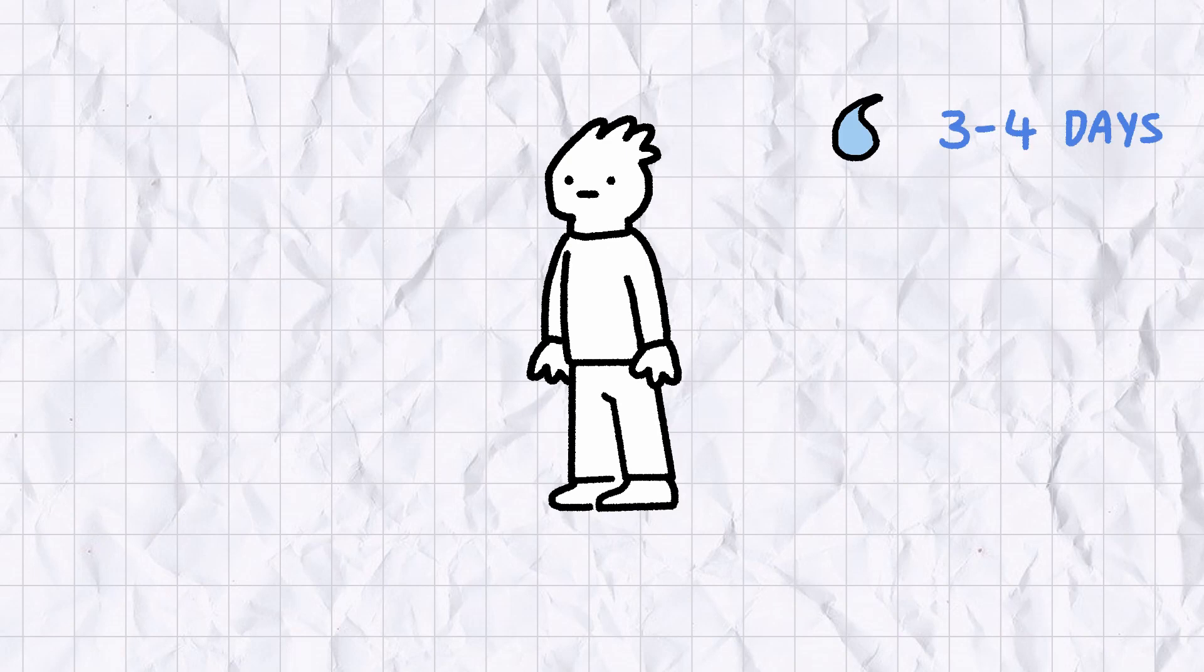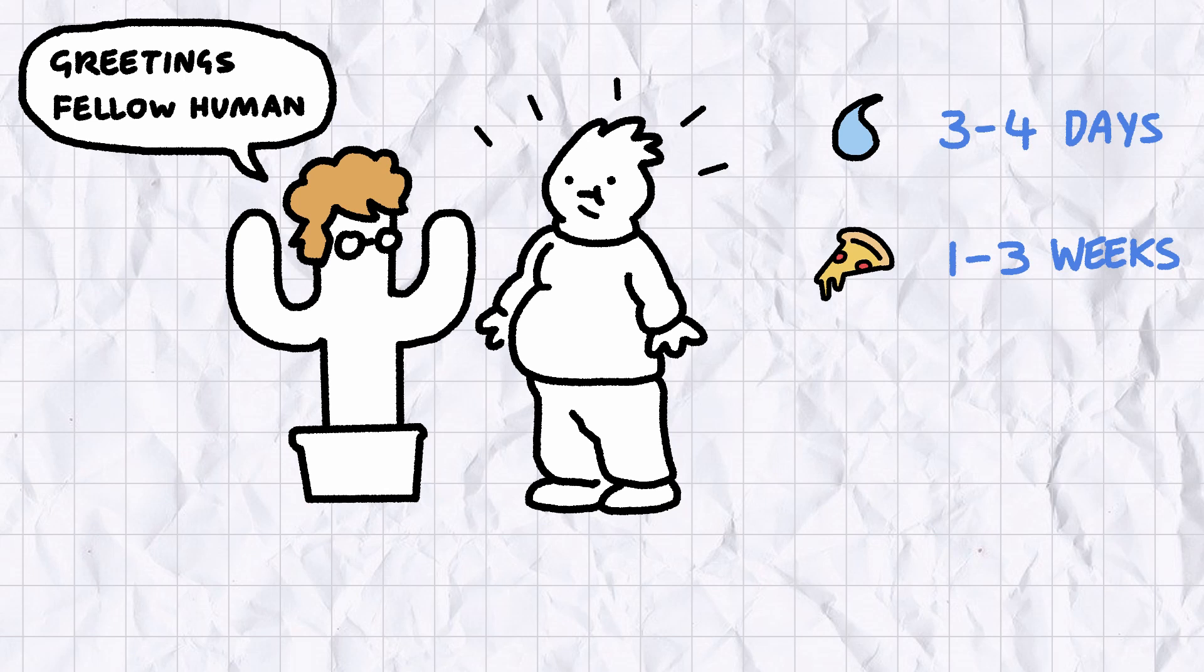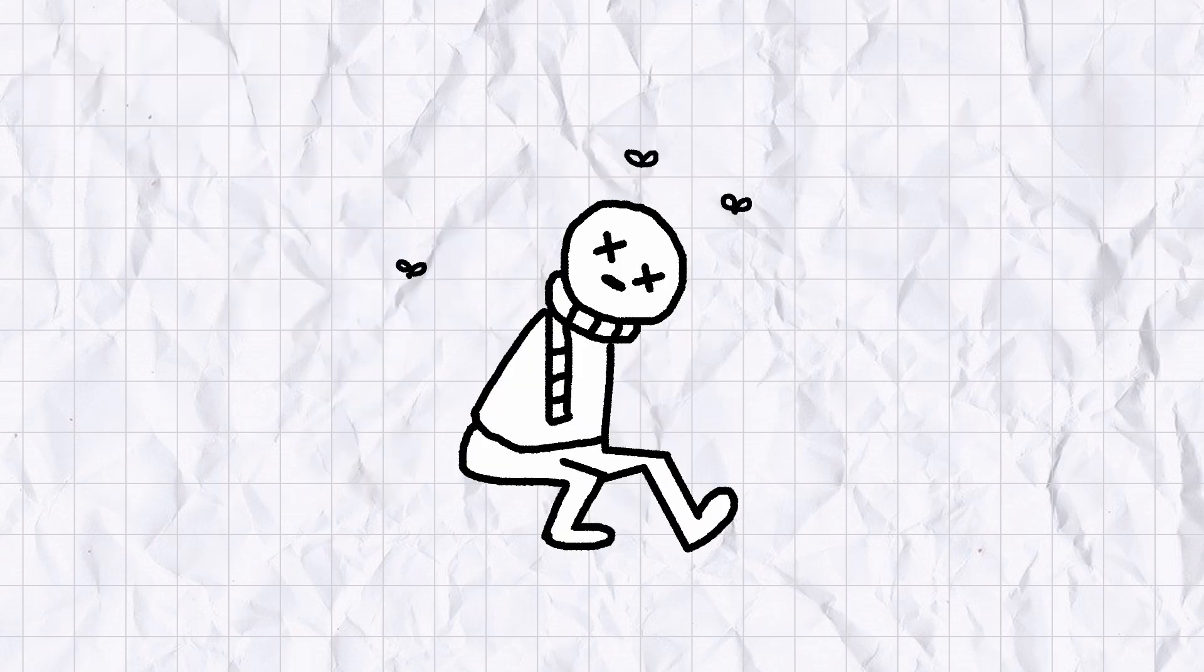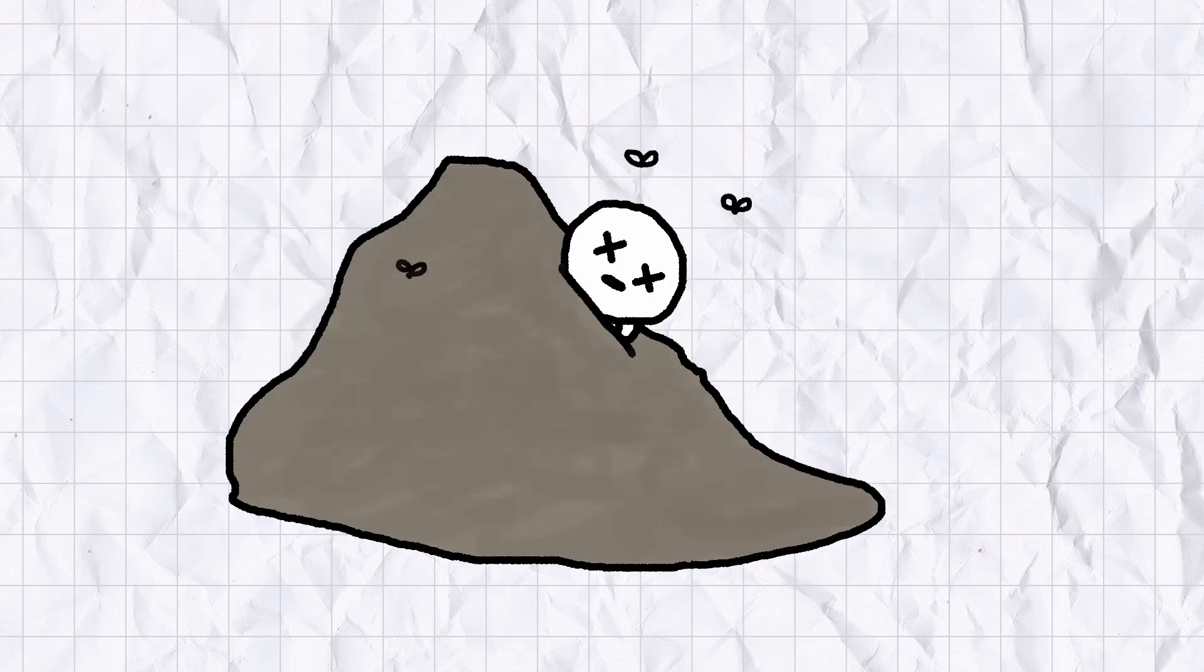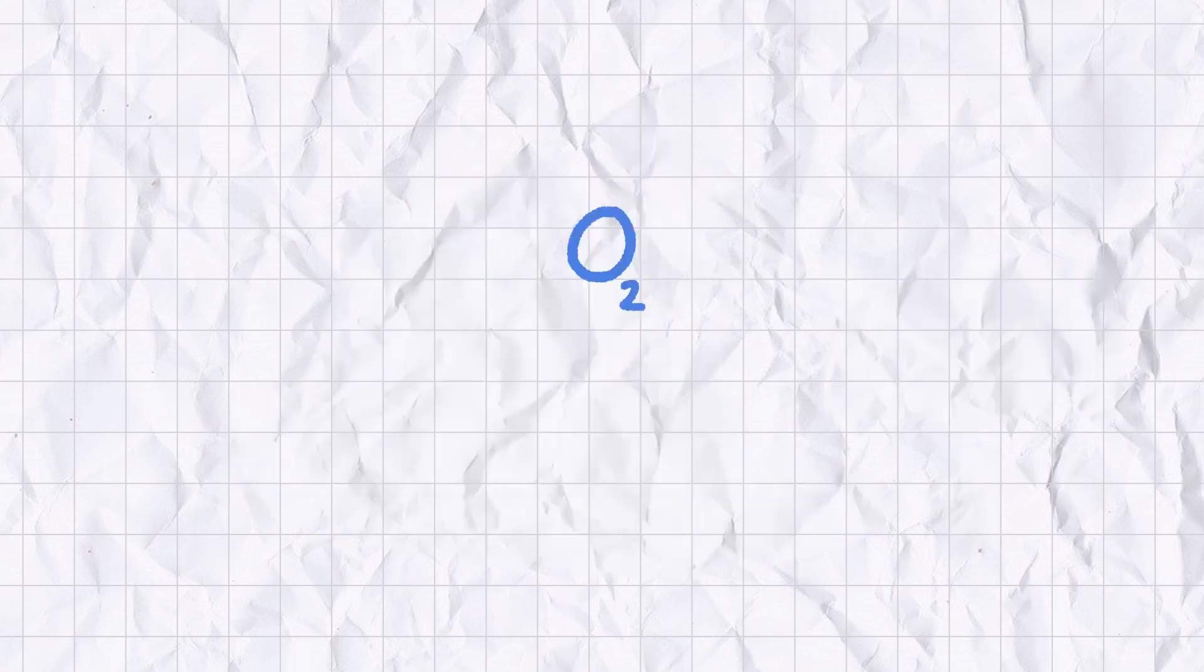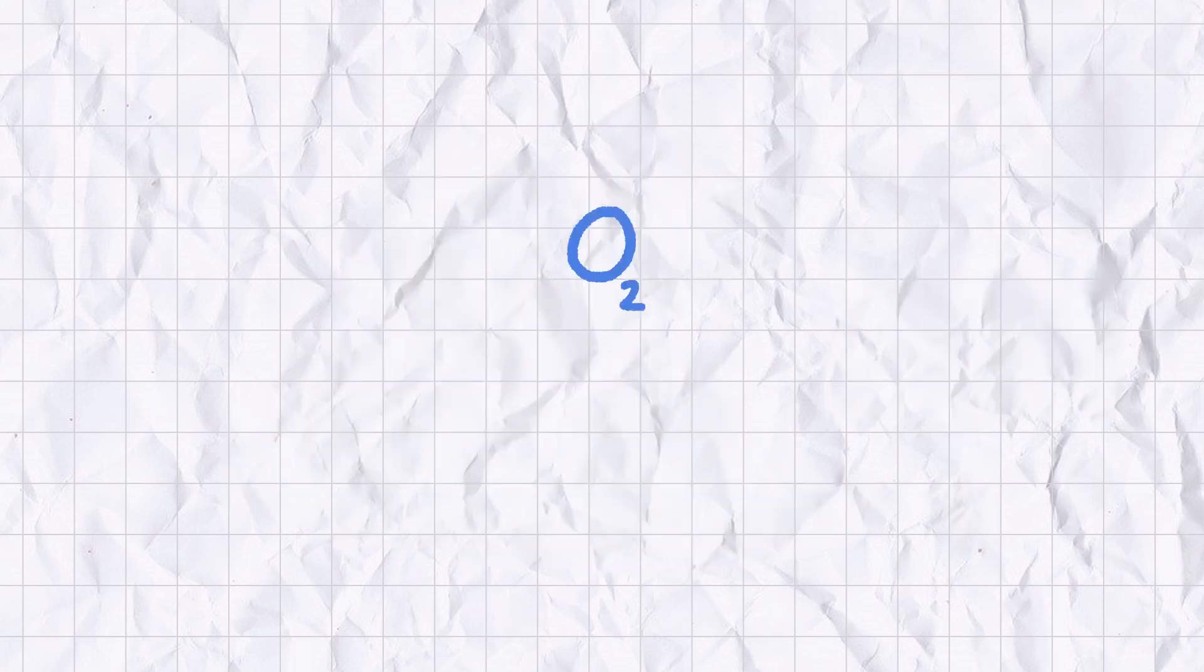People can survive for days without water and weeks without food, and potentially even longer if you're overweight or a cactus in a very convincing wig. But if you go more than a few minutes without oxygen, all you'll be fit for is compost material and impromptu Halloween decorations. This is because oxygen is a vital component in aerobic respiration.